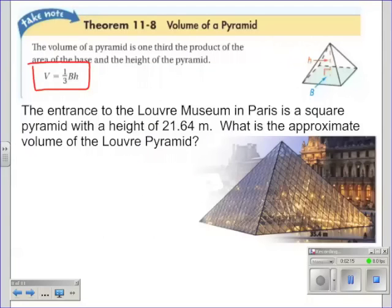So we'll use that formula now to find the volume of the pyramid that's located in Paris outside the Louvre museum. So we're given certain information. It's kind of hard to read down here but it is a square pyramid with a side length of 35.4 meters.